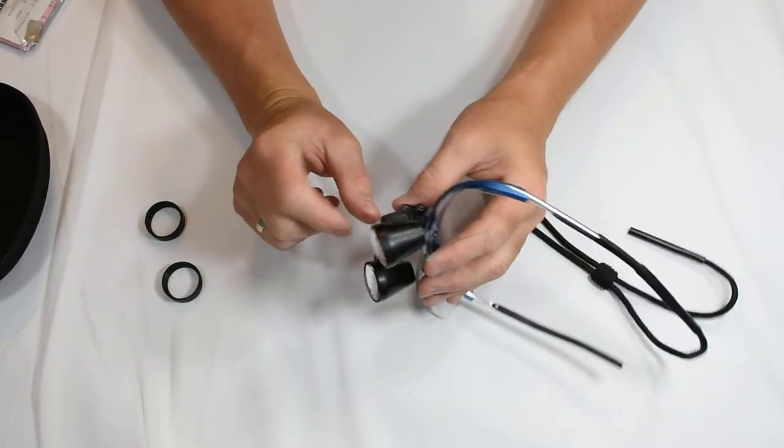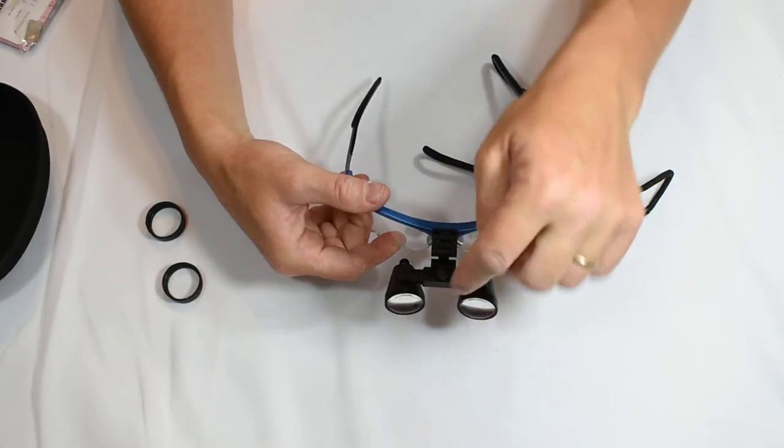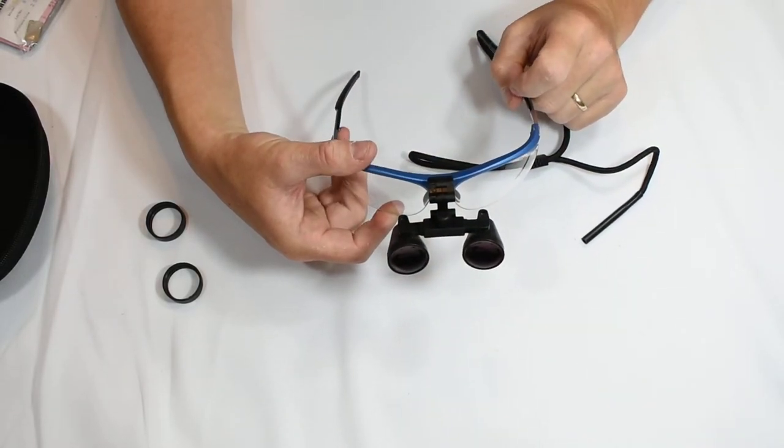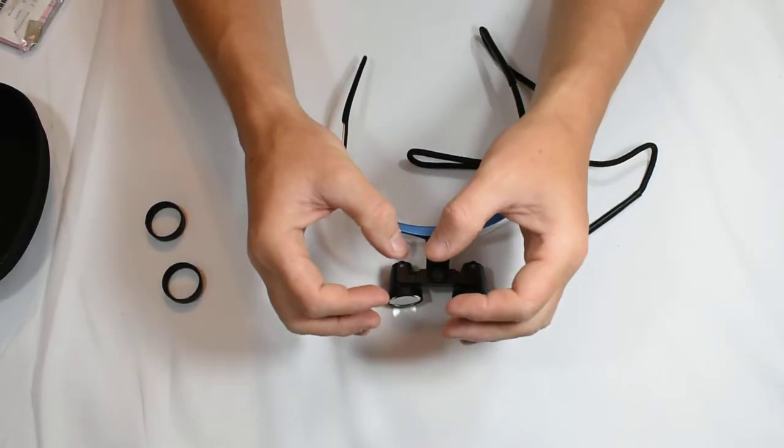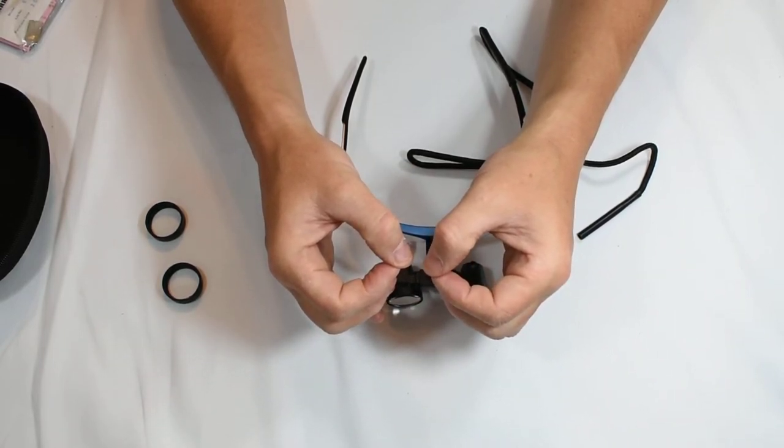Now once I have that adjustment made, then what I need to do is adjust the PD or pupillary distance. When you look through these you'll see two images most likely, and what you want to do is adjust the PD closer or further apart